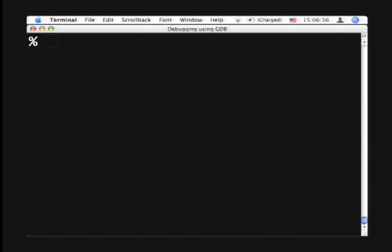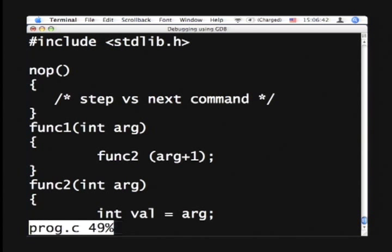Now let's look at the sample program to give a sense of what we are talking about. We look at the sample program called prog.c which has three different functions, none of which do anything useful, but they help us exercise some of the GDB functions. The first function is the noop function which doesn't do anything. The function called func1 takes an integer argument and calls a function called func2 by basically incrementing this argument.